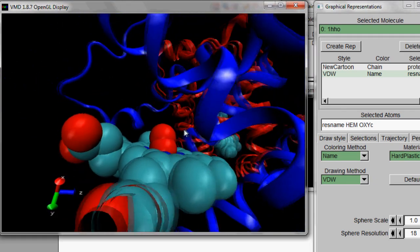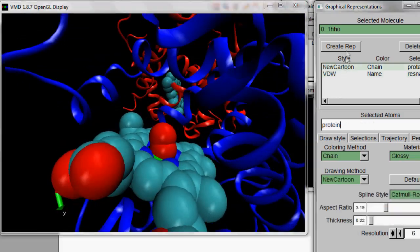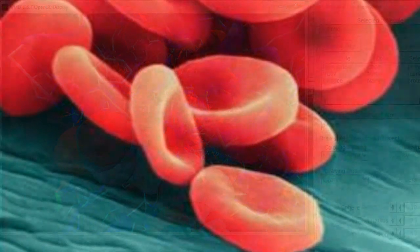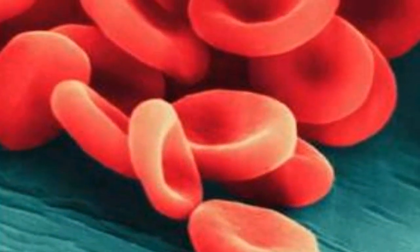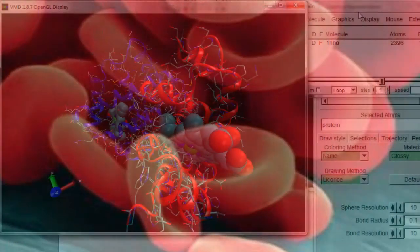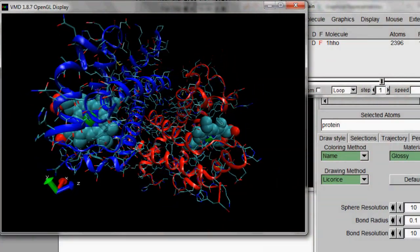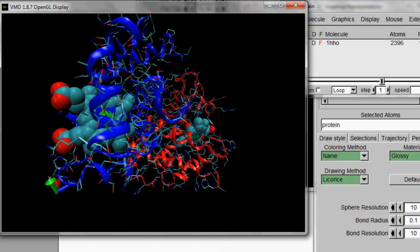Without this protein, your blood would only be able to carry about one hundredth of the oxygen that it does. As you watch this video, there are about a million million red blood cells pumping around your body. Each one containing about a third of a billion tetrameric hemoglobin molecules. Half of one of these is currently on your screen.